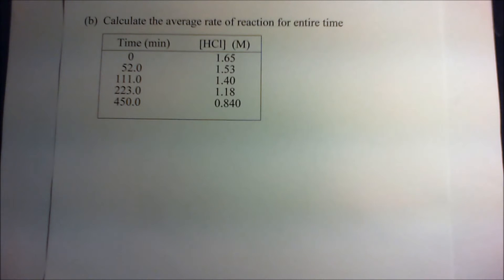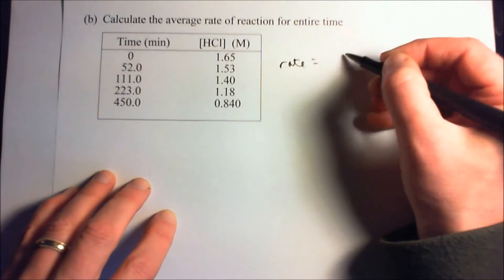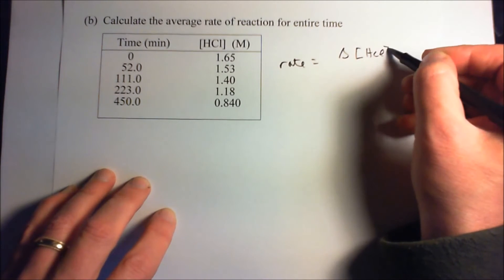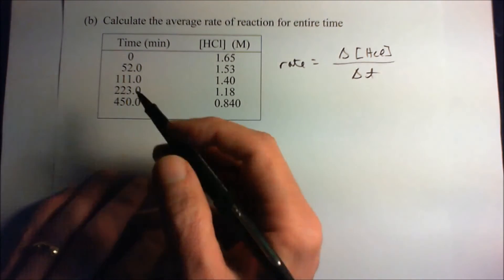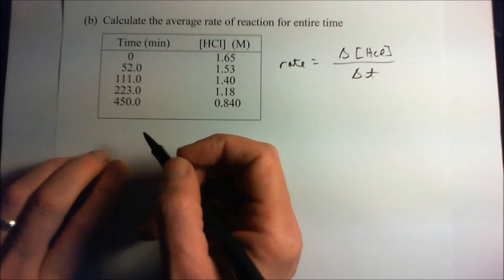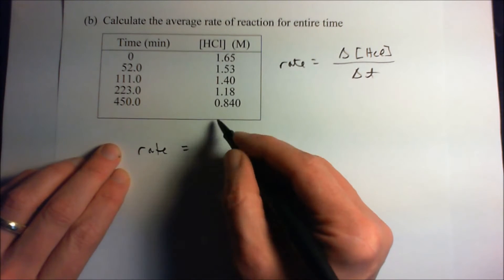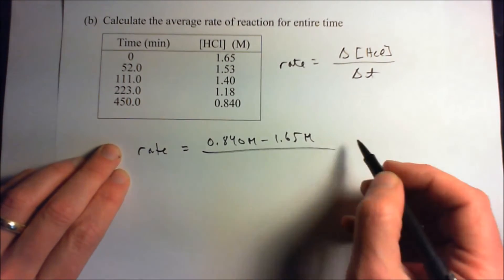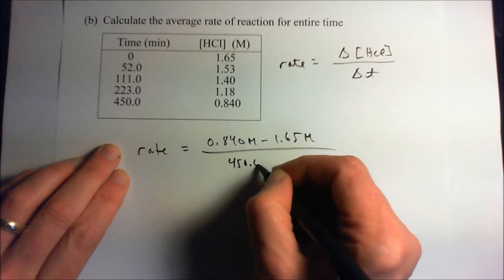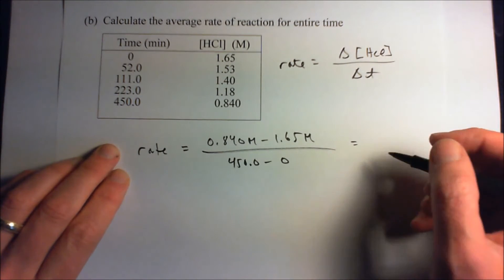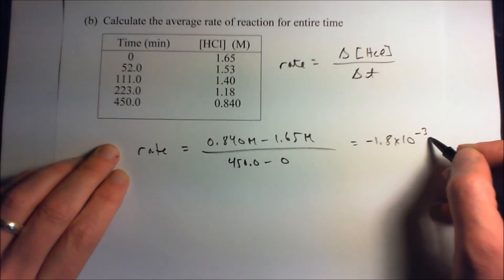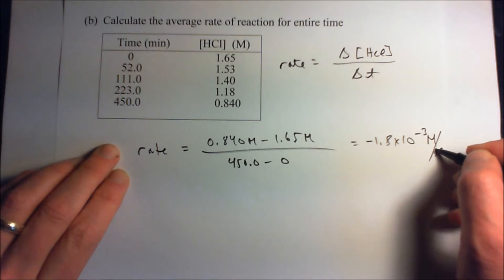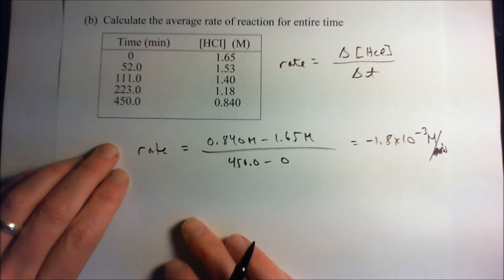Now we look at part B, where we calculate the rate of reaction for the entire time — from 0 minutes to 450 minutes. The rate is still the change in concentration of hydrochloric acid divided by the change in time for the period in question. It's the final concentration, 0.840 molarity, minus our starting concentration over the entire period of 450.0 minus 0, and that gives us minus 1.8 times 10 to the minus third molarity per minute.